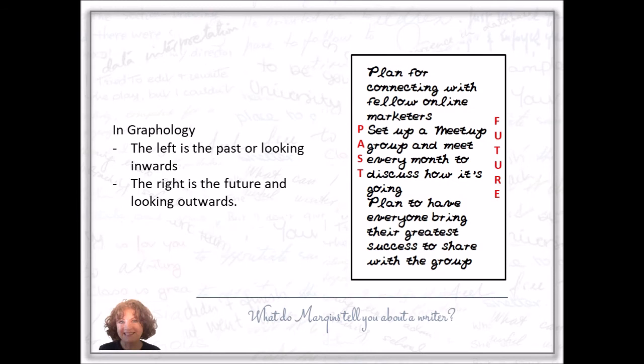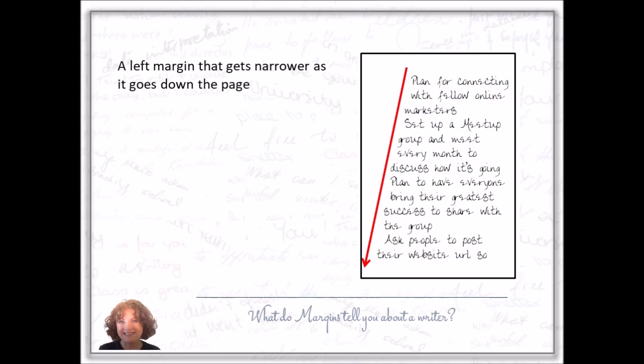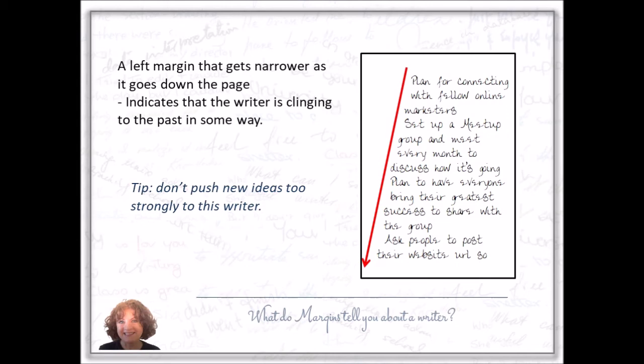A left margin that goes narrower as it goes down the page indicates that the writer is clinging to the past in some way. They start more out there and they come more back into themselves, into the past, as they go on. Tip: don't push new ideas too strongly to this writer. Be patient and do it gently. Take them one step at a time into something new.